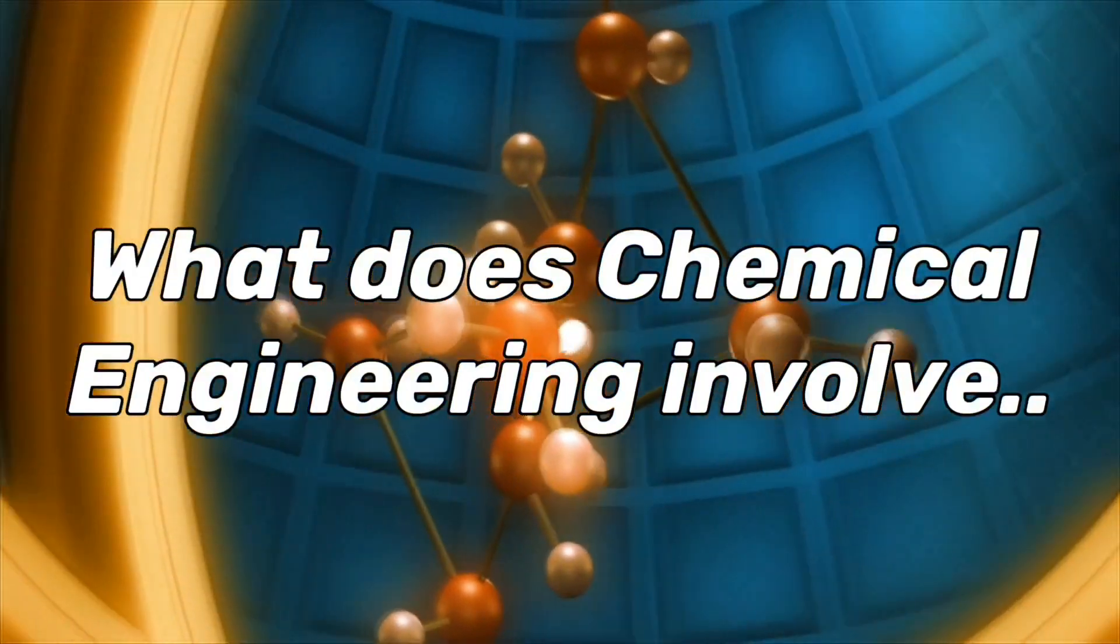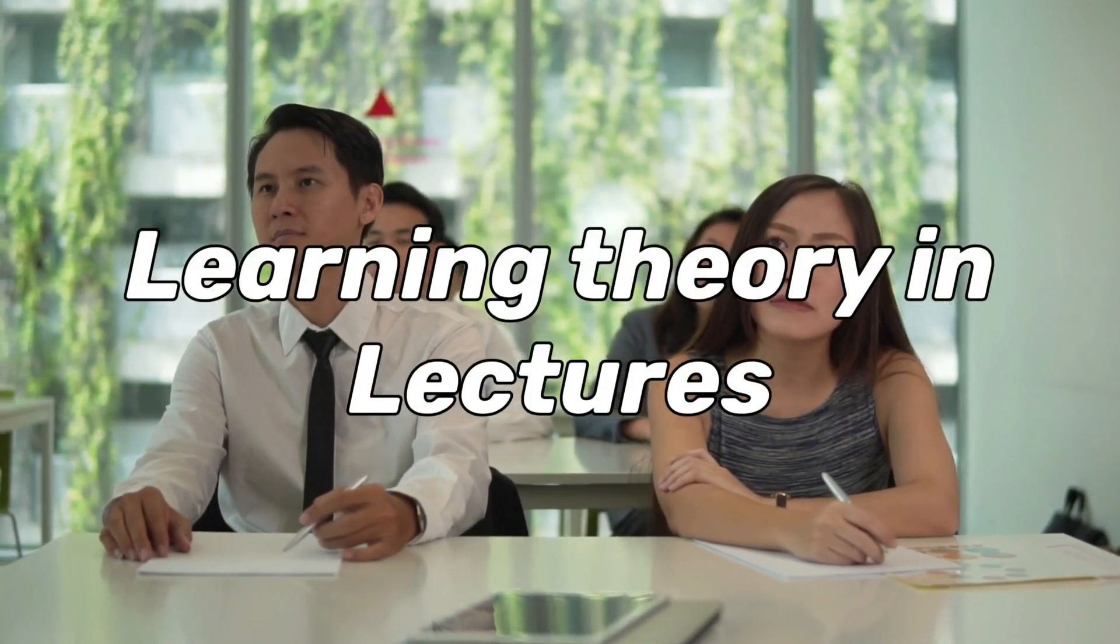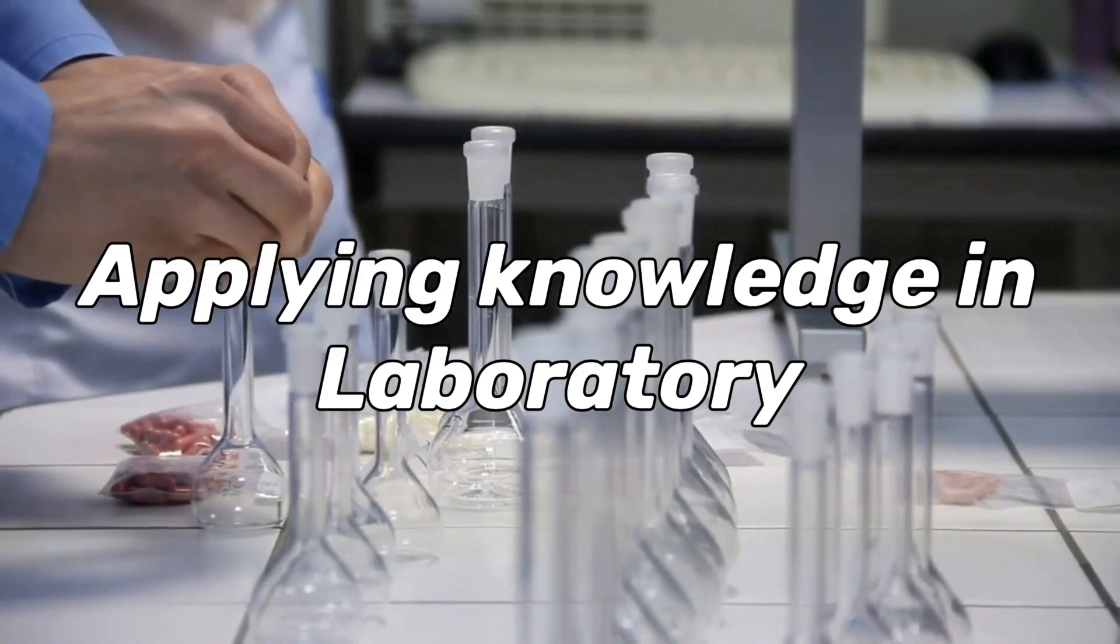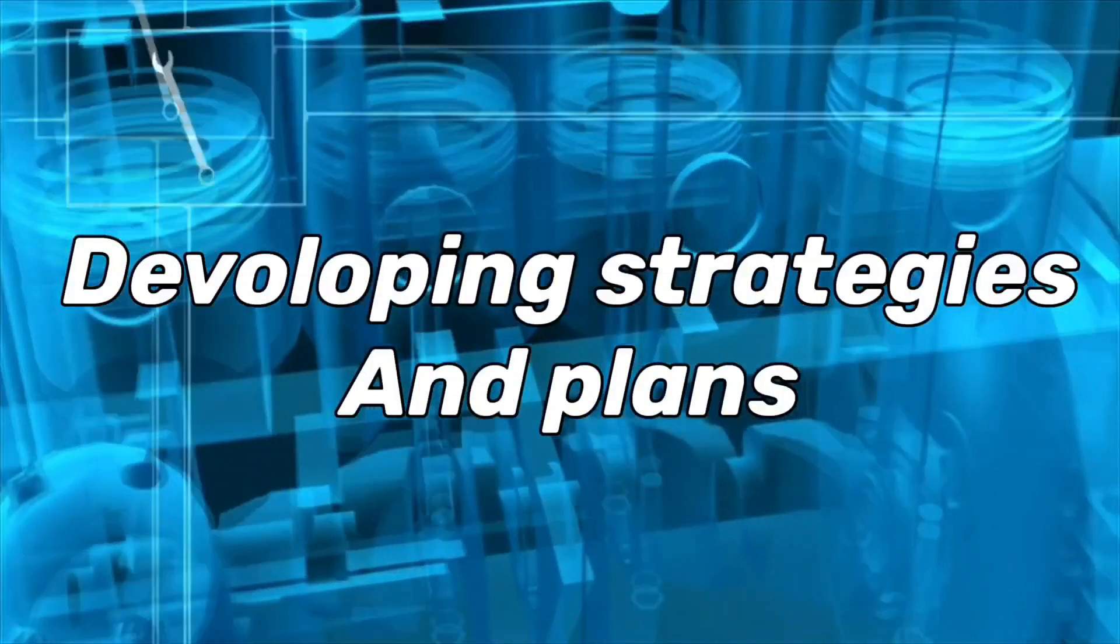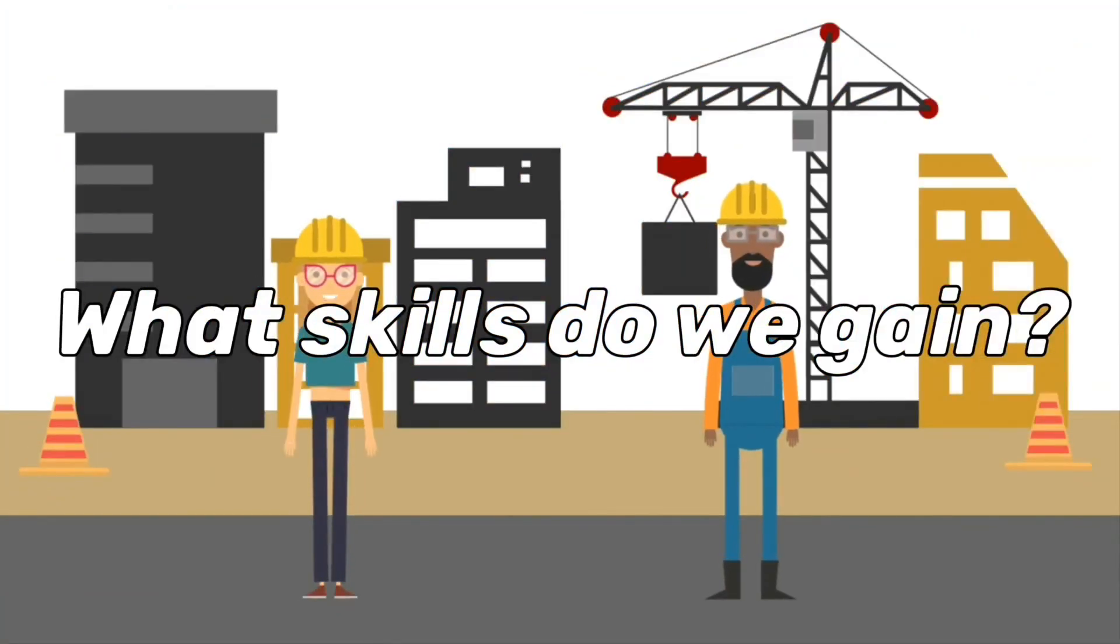What does Chemical Engineering involve? It involves learning theory and lectures like physics, chemistry, mathematics, and much more. It also involves applying knowledge in practical lab sessions, exploring new technologies, and developing industrial strategies and plans.